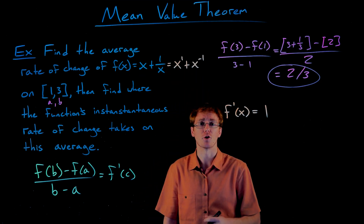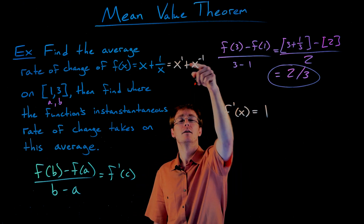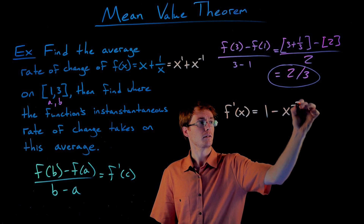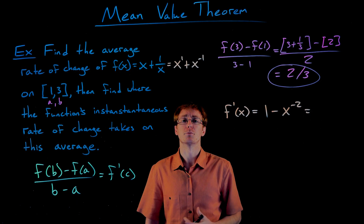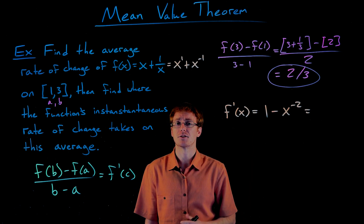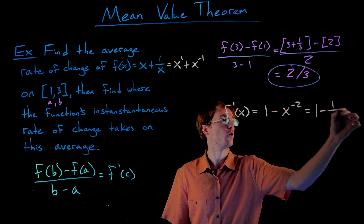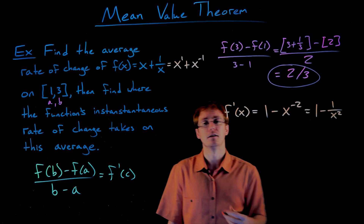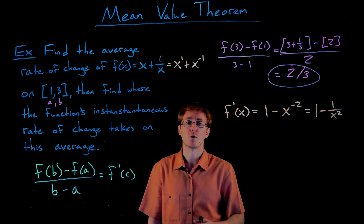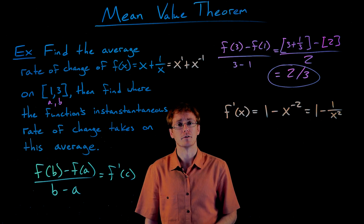Using the power rule: the derivative of x is just 1 — that's also the slope of a linear function. For the second piece, we bring the exponent out front and decrease the exponent by 1. So the general derivative of our function is 1 − x⁻², which we can rewrite as 1 − 1/x². We want to write it in this form because we're about to solve an equation using the derivative.